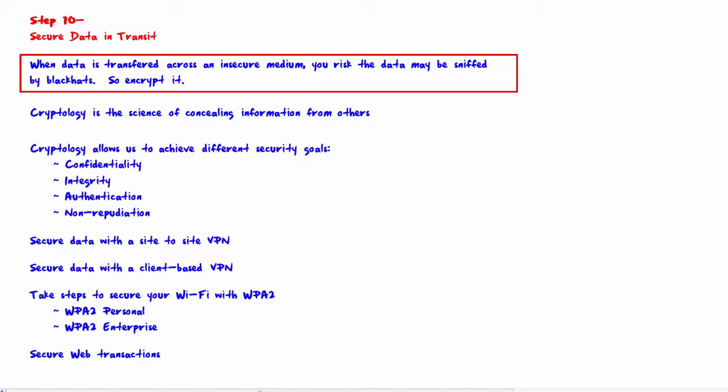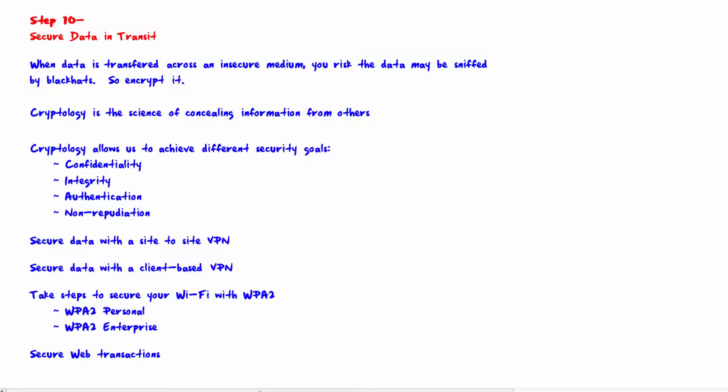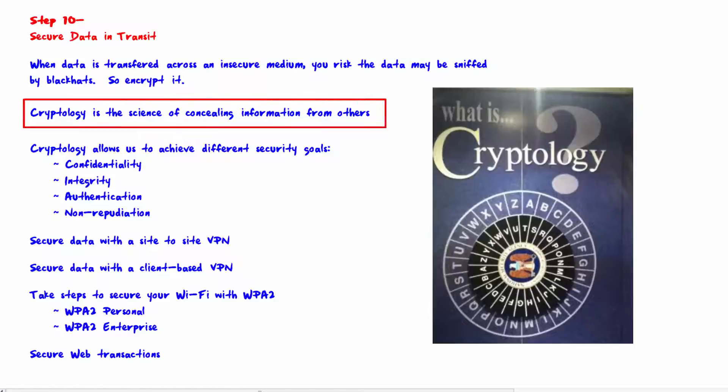To secure the data, the sender must encrypt it while it is crossing the insecure medium, and then it must be decrypted by the receiver. Cryptology is the science of concealing information from others. In cryptology we deal with plain text, also called clear text, which is data that can easily be read by anybody.